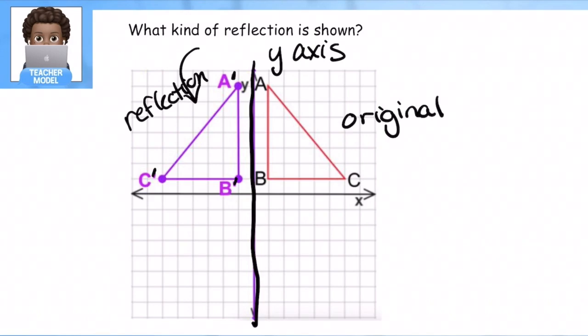The other thing I want you to notice is notice how these parts here, the Bs, are both the same distance from the mirror. It's from the reflection. They're both one away. These are both one unit away.